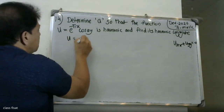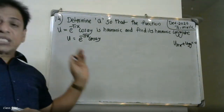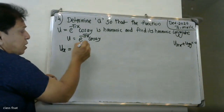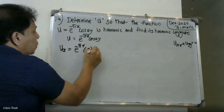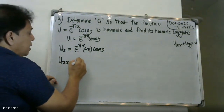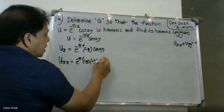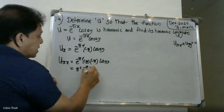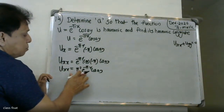u = e^(-πx) cos(ay). Now partially differentiate with respect to x: u_x = cos(ay) times e^(-πx) into minus π, so u_x = -π e^(-πx) cos(ay). Then u_xx = π² e^(-πx) cos(ay).